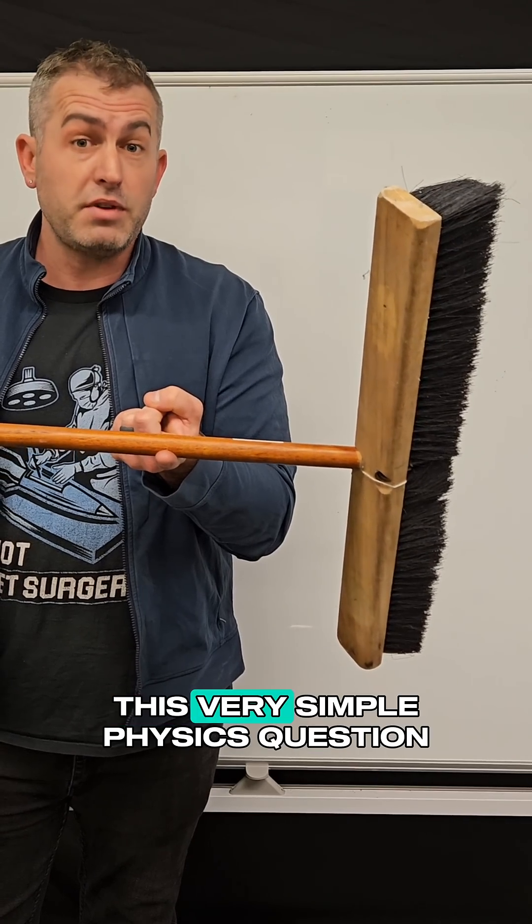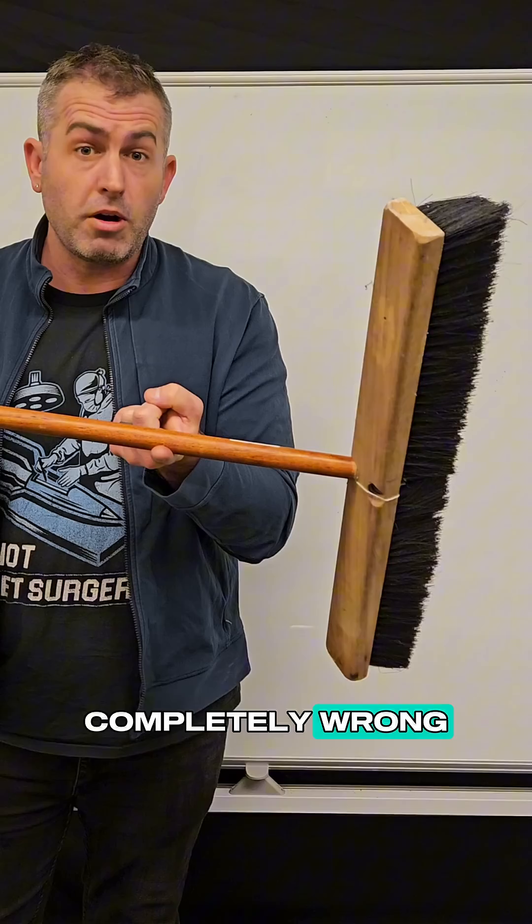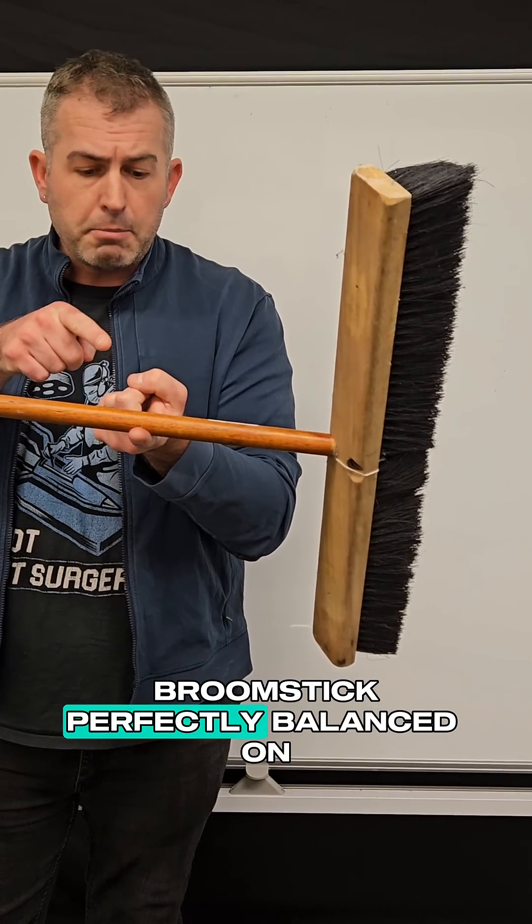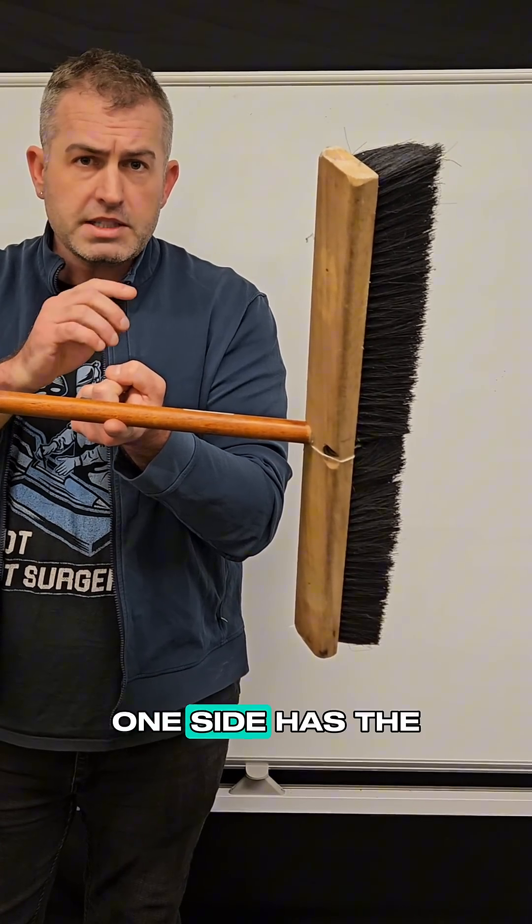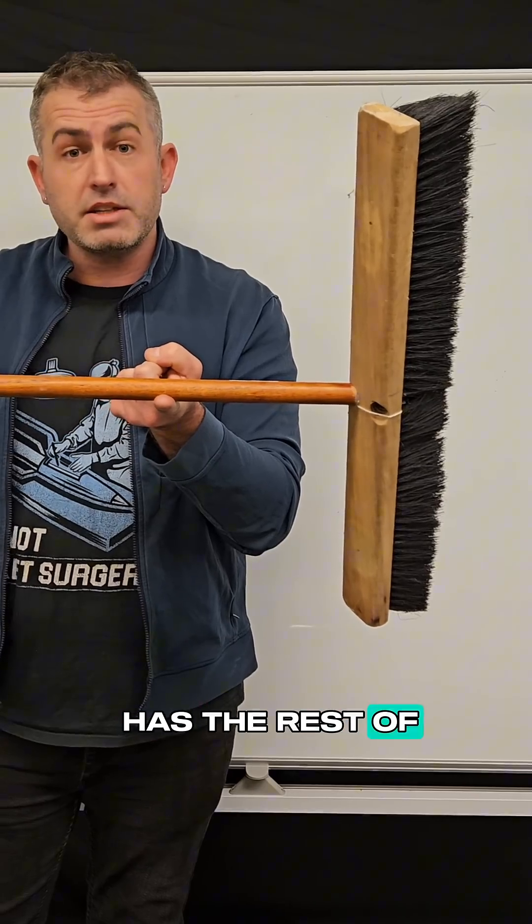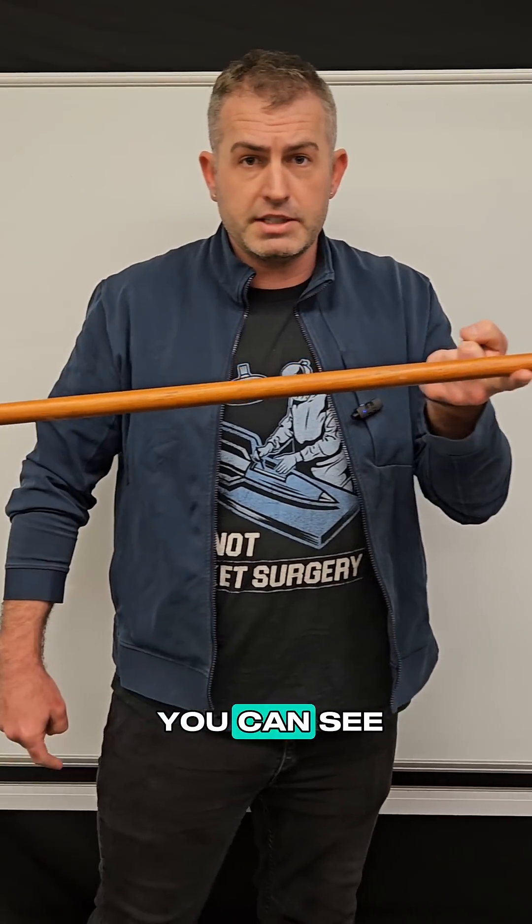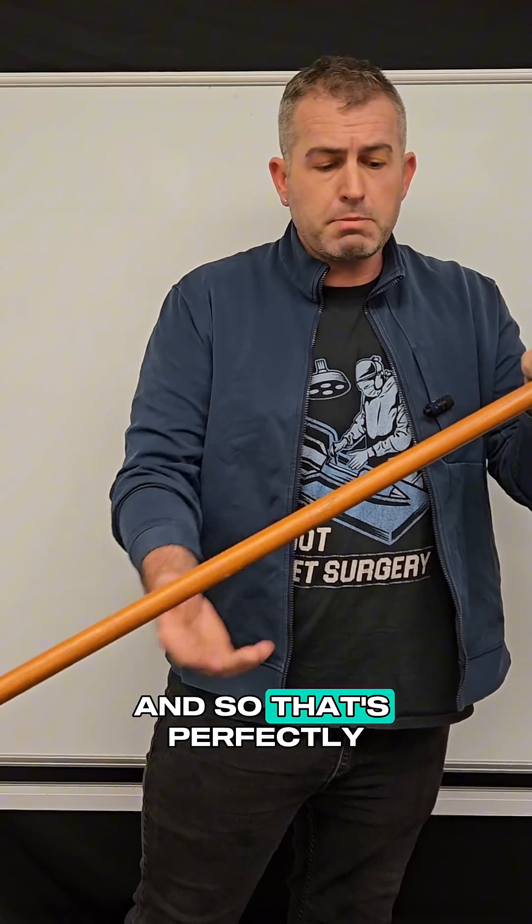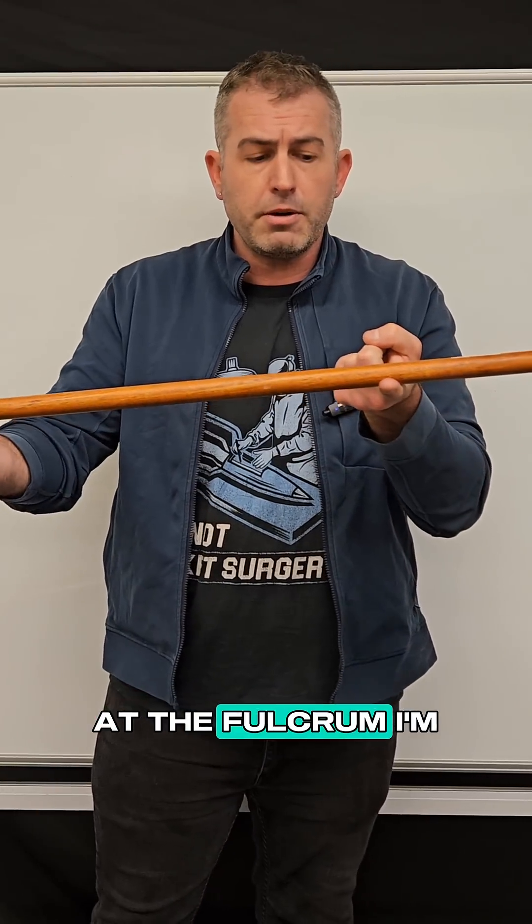95% of people get this very simple physics question completely wrong. So I have a broomstick perfectly balanced on my finger. One side has the broom head and a little bit of stick, and the other side has the rest of the stick. And I'll bring it into frame just so you can see I'm not cheating here. And so that's perfectly balanced right on my finger at the fulcrum.